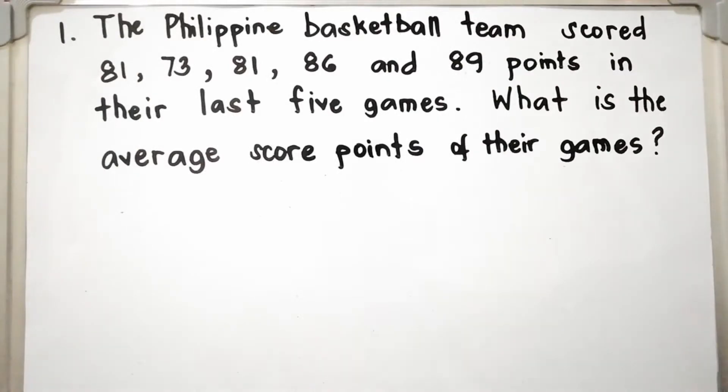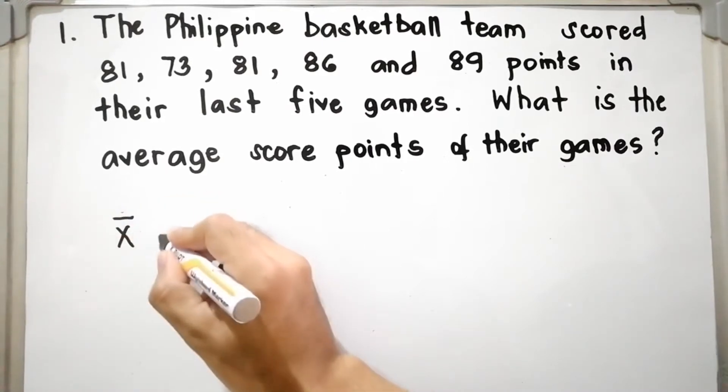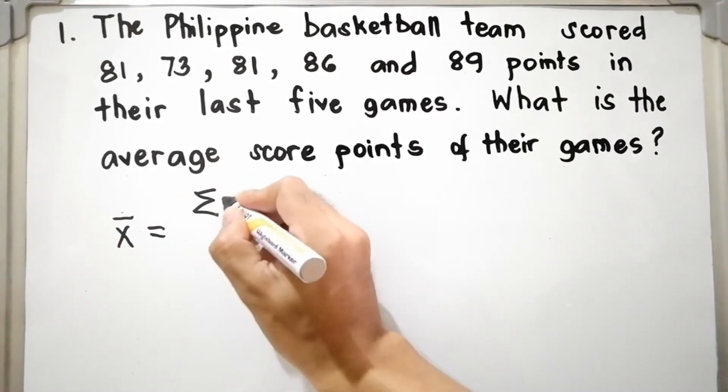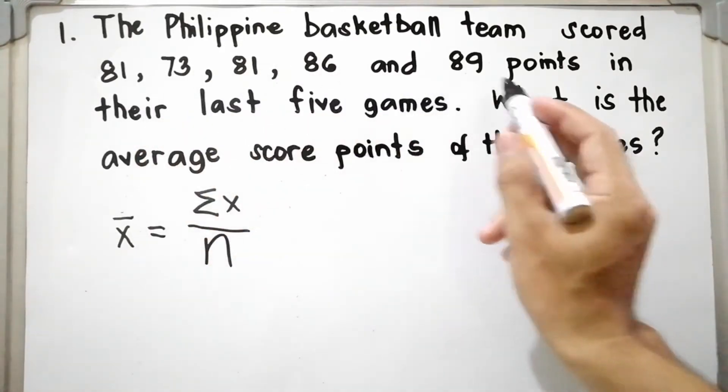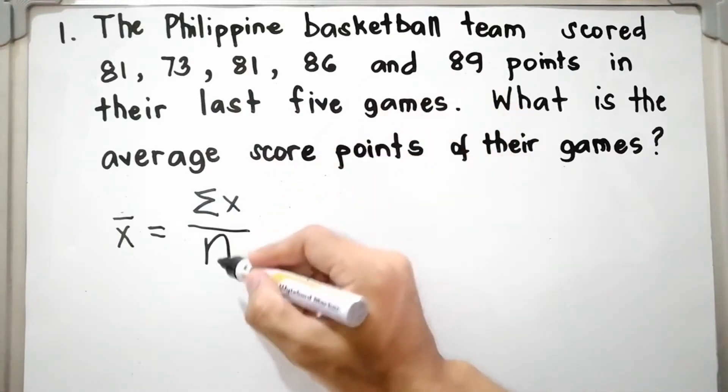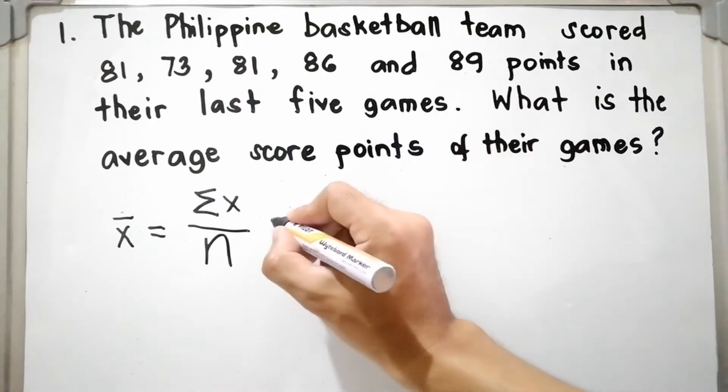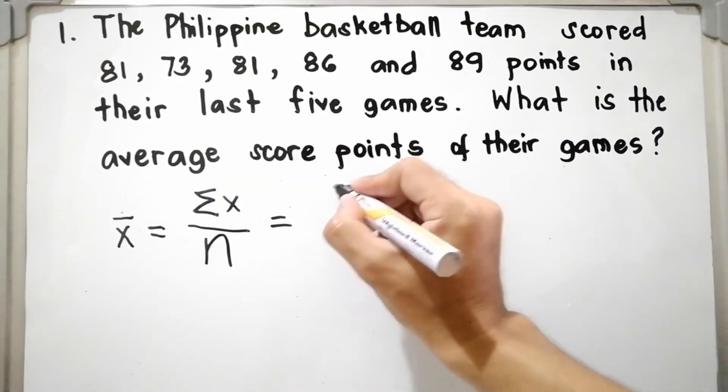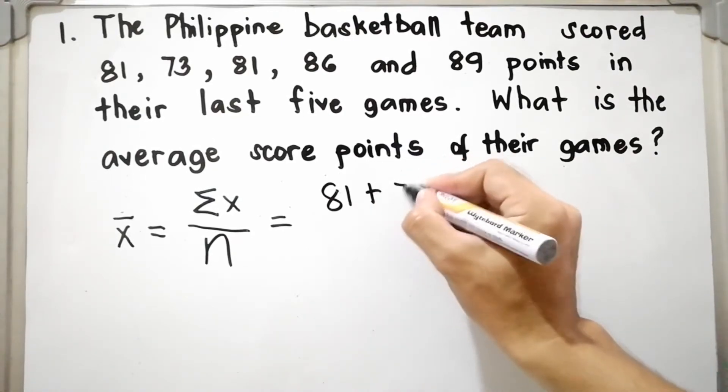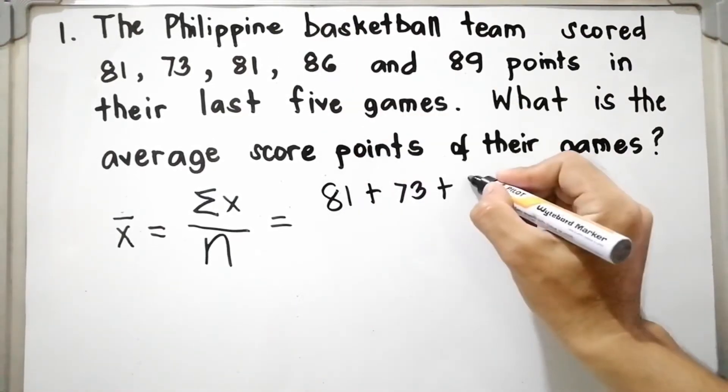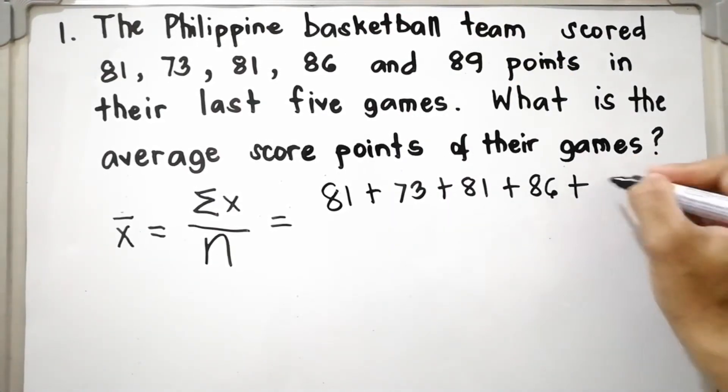Let us compute the mean. The mean is denoted as x bar. That is equal to the summation of x all over n. Summation of x meaning we have to add all the values of points or scores, divided by n, the number of scores. We have n equals 5. That is equal to 81 plus 73 plus 81 plus 86 plus 89.